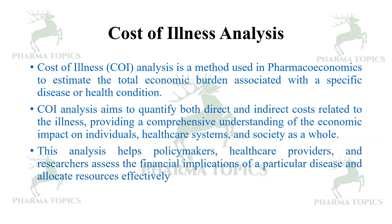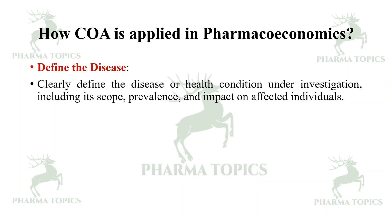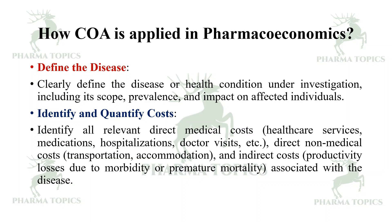This analysis helps policymakers, healthcare providers, and researchers assess the financial implications of a particular disease and allocate resources effectively. How is COI applied? Define the disease — clearly define the disease or health condition under investigation, including its scope, prevalence, and impact on affected individuals. Then identify and quantify the costs — all relevant medical costs (healthcare services, medications, hospitalizations, doctor visits), direct non-medical costs such as transportation and accommodation, and indirect costs such as productivity losses due to morbidity or premature mortality.